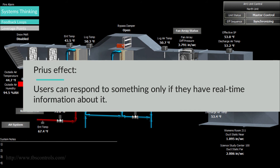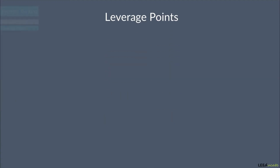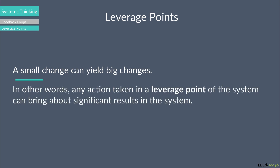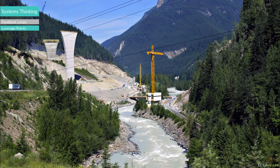We will continue our discussion with leverage points. A small change can yield big changes. Any action taken in a leverage point of the system can bring about significant results in the system. Think about a construction site that is located close to a river, and that river is the main irrigation source of the surrounding farmlands. If the construction site does not take any action to stop sedimentation and pollution resulting from the construction activities, the whole river can then become contaminated.